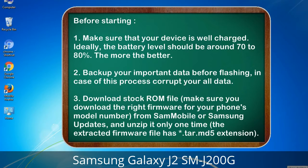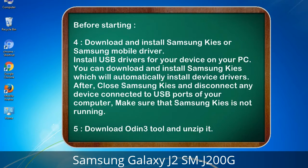Download the firmware from Sammobile or Samsung Updates, and unzip it only one time. The extracted firmware file has a *.tar.md5 extension. 4. Download and install Samsung KIES or Samsung mobile driver to install USB drivers for your device on your PC. Samsung KIES will automatically install device drivers. After installation, close Samsung KIES and disconnect any device connected to USB ports — make sure Samsung KIES is not running.